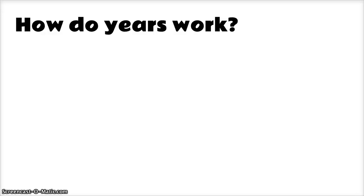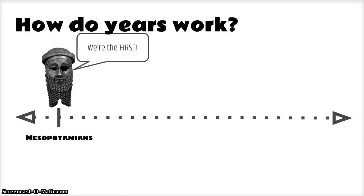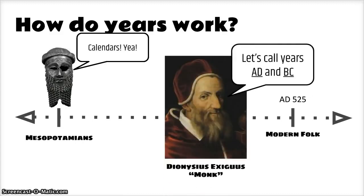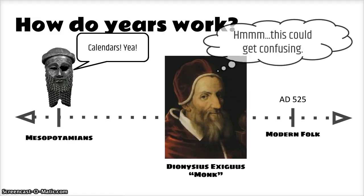All right, here we go — BC and AD in five minutes or less. I've had a lot of questions about this, so here we go. Keeping track of time dates back to the ancient Mesopotamians. There were many civilizations that had their own system of keeping track of years, but our modern system of numbering years was not developed until AD 525 by a man named Dionysius Exigius.